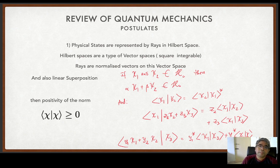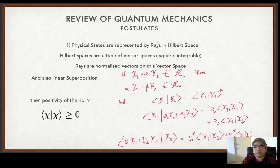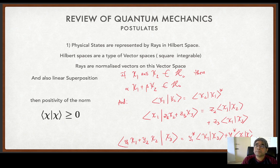Some of the properties of this Hilbert space are: if you have two vectors chi1 and chi2 belonging to Hilbert space H₀, then alpha*chi1 + beta*chi2 also belongs to H₀. So chi1 and chi2 could be in some n-dimensional vector Hilbert space — it could be infinite dimensional as well, as you will see in quantum mechanics courses. A linear combination of them also belongs to the same vector space, where alpha and beta are complex numbers.